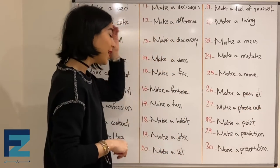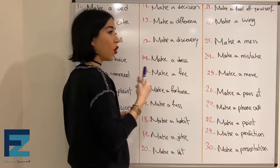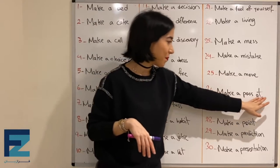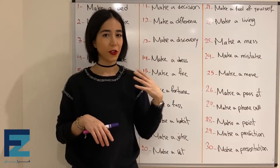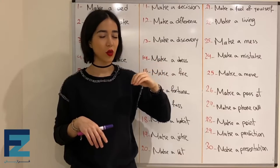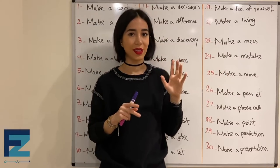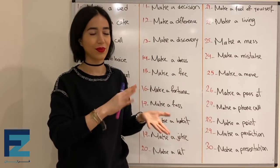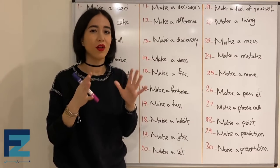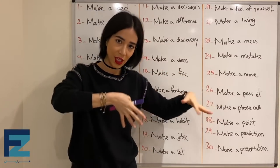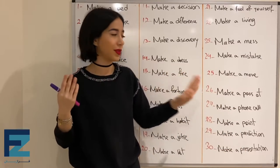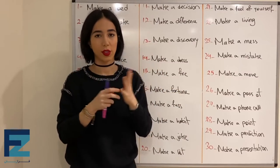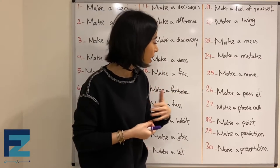Number twenty-six: make a pass at. This is very colloquial — it means to hit on someone, to try to flirt with someone. Make a pass at someone means to try to flirt with someone, often with a slightly sexual connotation. ولی شاید تو حالت عادی هم به کار برده بشه.